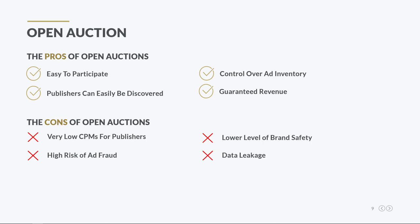Another downside of participating in open auctions is that some publisher and user data can easily get leaked. As mentioned in the previous lesson, when someone visits a webpage that contains an ad space, the publisher's supply-side platform sends an ad request with publisher and user information to ad exchanges, which are then passed on to DSPs. Those ad requests store a lot of data like publisher details and user demographics.